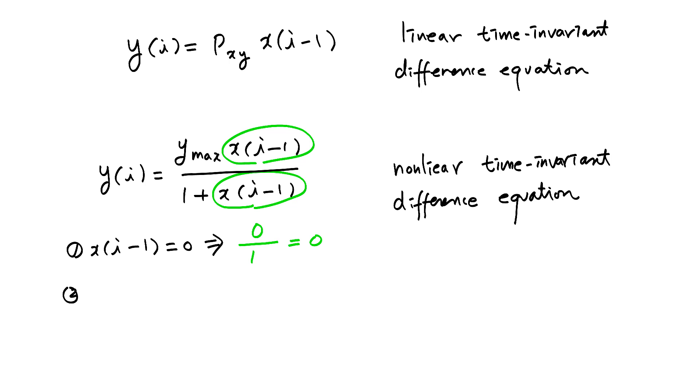How about if X of I minus 1 is infinity? Then we have Y max times infinity over 1 plus infinity. Since this is so small compared to this, we can ignore this value, 1. And we can say that it's Y max times infinity over infinity. And infinity, infinity cancel out, and we are left with Y max.